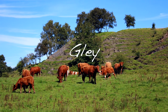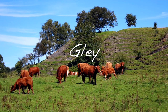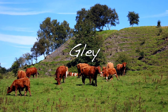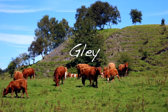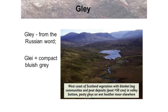The name gley soil comes from the Russian word 'Glay'. Gleys are compact, with a bluish-grey colour due to the lack of oxygen, mostly caused by waterlogging. This picture, taken on the west coast of Scotland, shows a blanket bog community with peat deposits in the valley bottom and peaty gley on the wet heather moor elsewhere.